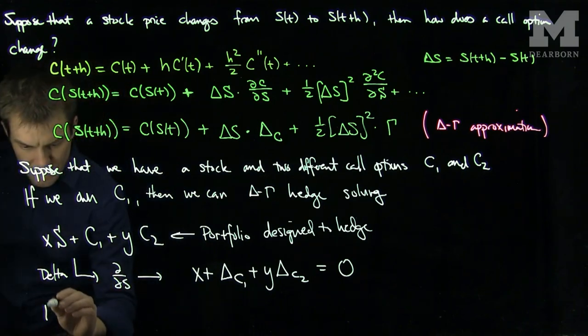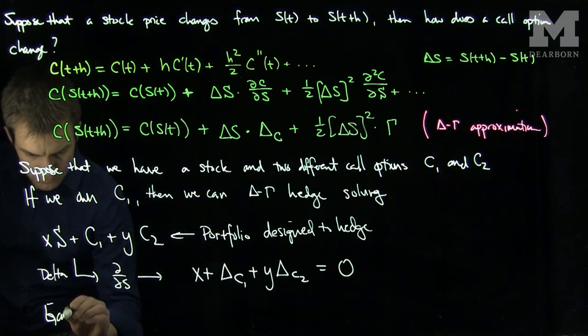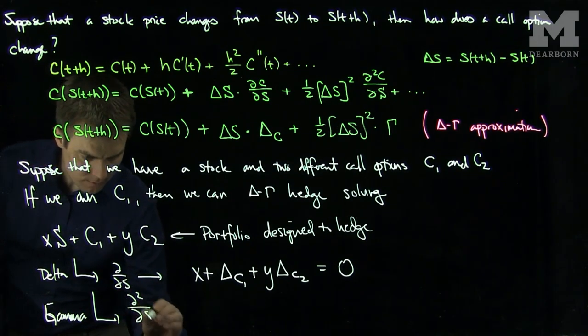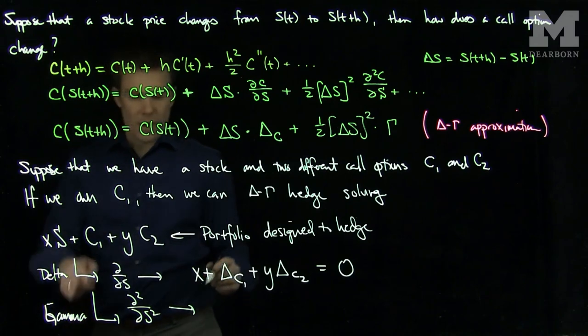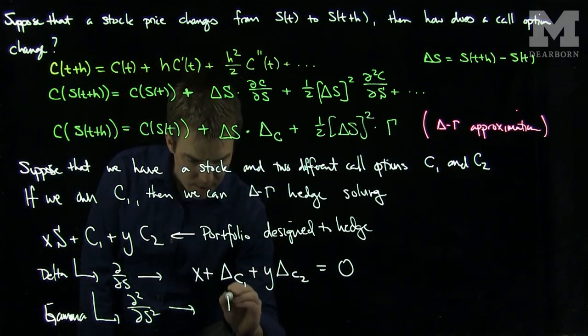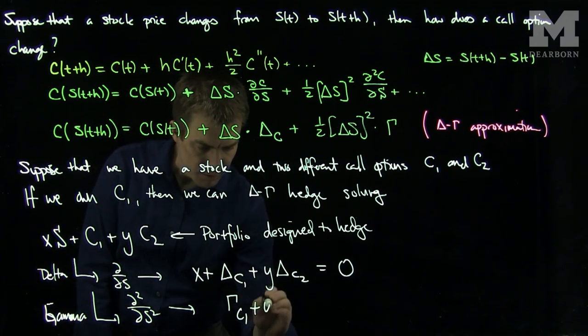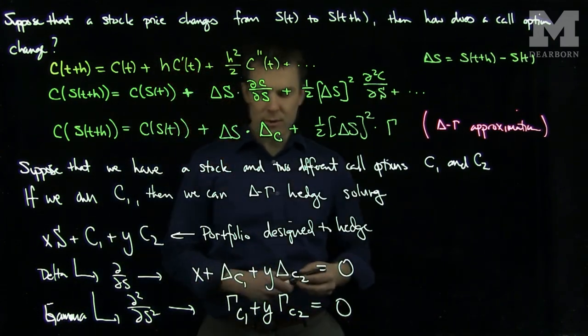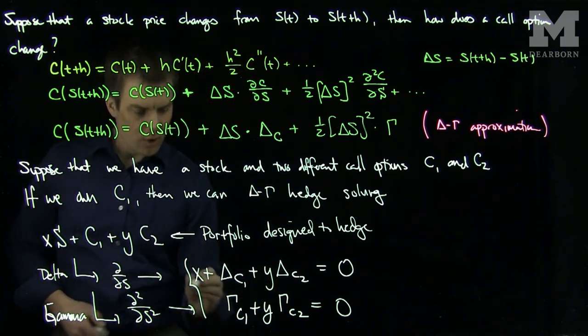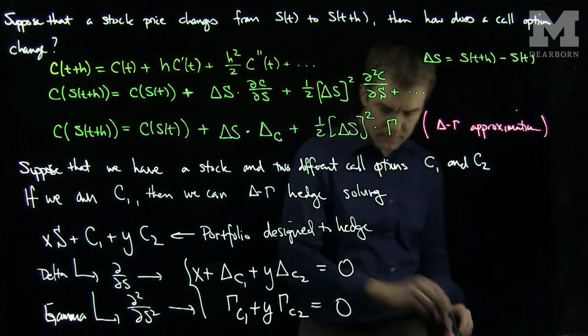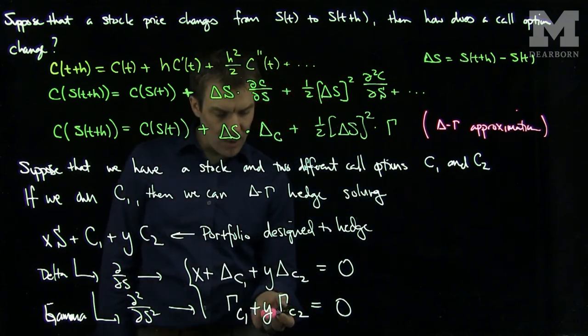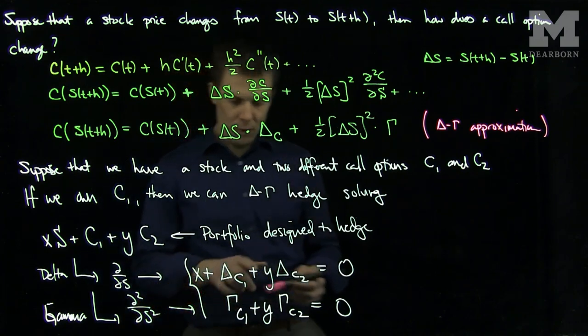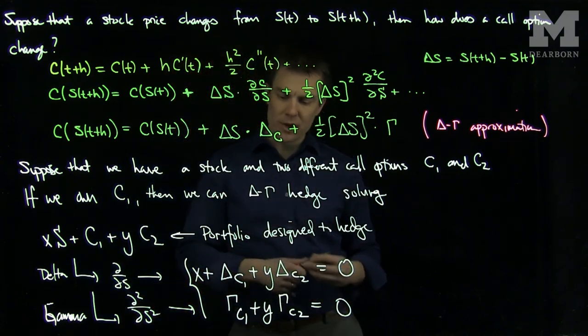And we'll compute the gamma by doing the second S derivative. The second S derivative will give me the gamma of C₁ plus y times the gamma of C₂, and set this equal to 0. Solving this system will be easy because we'll simply see that y will be the ratio of negative gamma C₁ over gamma C₂. Once we know y, we can plug it back into this equation and find x,